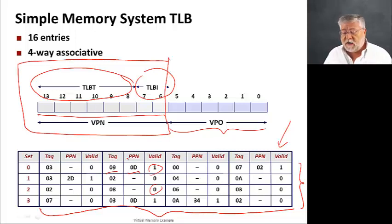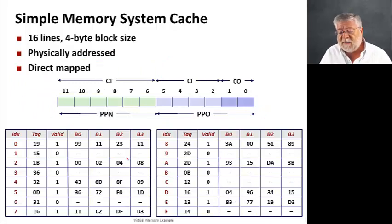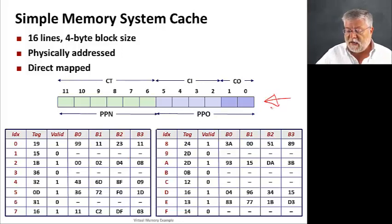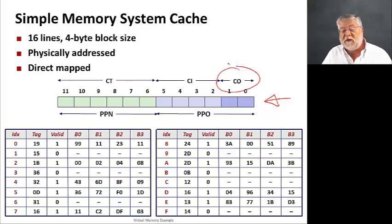The last part of our sample example system is the system cache, the main memory to CPU cache. And, in this case, this will be using physical addresses. So, we'll be taking our physical address and breaking it up into the bits we need for these cache accesses. There will be a block offset of only two bits because we're going to use a block size of four bytes.